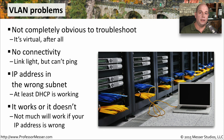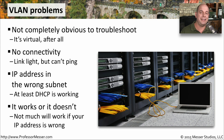One good thing to know is that if you have been assigned an IP address, configured it, connected to the switch, and everything is working, then you're on the correct VLAN. If you were assigned the incorrect VLAN and tried to connect with a static IP address and default gateway, you wouldn't be communicating with anything on the network.